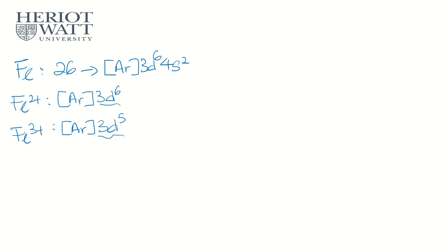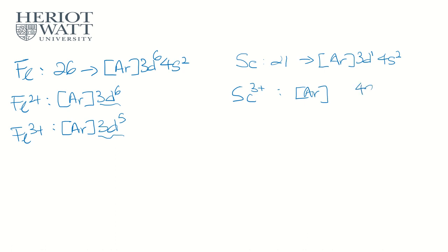Let's look at an element from the d-block that is not a transition metal: scandium, proton number 21, with configuration [Ar] 4s2 3d1. It is still a d-block element because it involves 3d orbitals. However, the only ion scandium forms is Sc3+, which has configuration [Ar] 4s0 3d0 — empty d orbitals. Therefore, scandium is not considered a transition metal, just a d-block element.